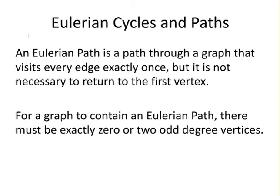For a graph to contain an Eulerian path, there must be exactly zero or two odd vertices. Now, just to be clear, when I mean zero, an Eulerian cycle is a type of Eulerian path.